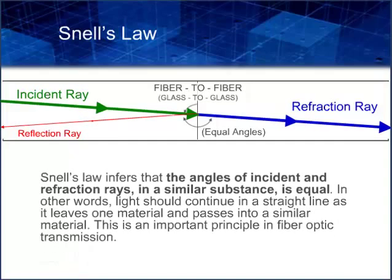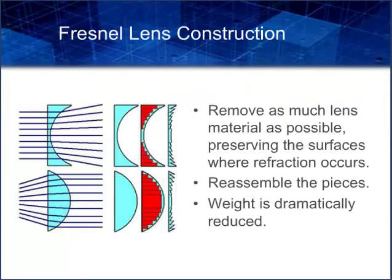Snell's law infers that the angles of incidence and refraction rays in similar substances are equal — light should continue in a straight line as it leaves one material and passes into a similar material. This is an important principle in fiber optic transmission. As light travels through the glass-to-glass interface typically used in fiber optics, between fiber end faces in a connector or splice, there should be little or no refraction if the fibers have the same refractive index. Dirt, damage, and improper termination or splicing techniques will cause degraded performance and loss by changing the refraction angles or increasing the amount of light reflected back from the interface, allowing less light through to its destination.